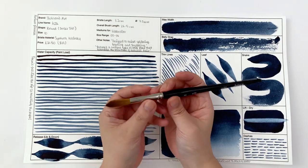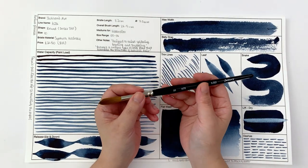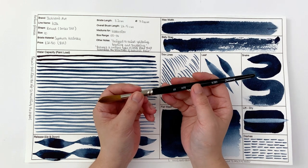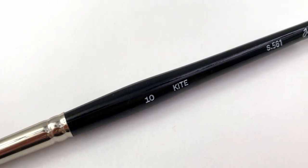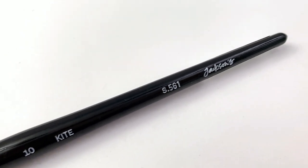Welcome back to the brushing test series in which I test out a whole bunch of size 10 round brushes. In this episode we're going to be taking a look at the Jackson's Art Kite brush.